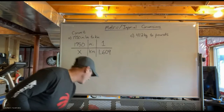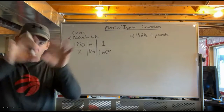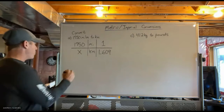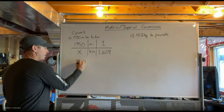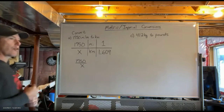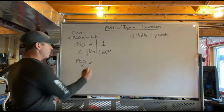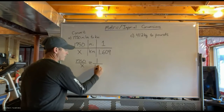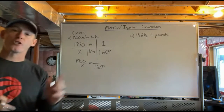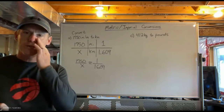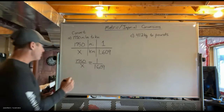Now that my table is complete, I get rid of the messy stuff and it becomes an equation. I take 1,750 divided by x on one side as a fraction, equal to 1 over 1.609 on the other side. Just like we did before, when I have a fraction equaling a fraction, I have to cross multiply.